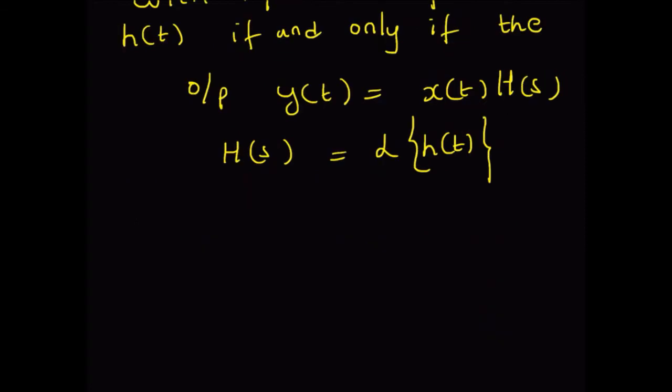So for a linear time-invariant system, if the output has the structure y(t) = x(t) · H(s₀), where H(s₀) is the Laplace transform of the impulse response, and x(t) has an exponential structure, then x(t) is an eigen function of the LTI system. We can easily prove this by looking at the definition of the output.